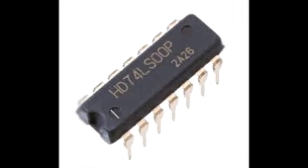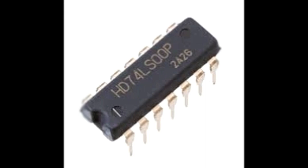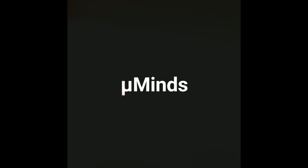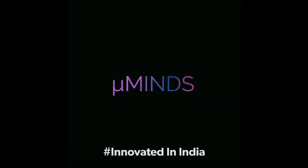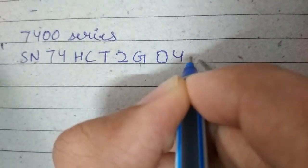If you ever buy logic ICs from the market, you might wonder about the additional codes written within or outside the 74 and XX numbers. So what are these additional codes? Let's find out in this video. We'll take an example of a 7400 series IC like SN74HCT2G04N.